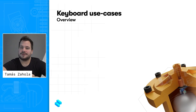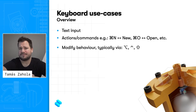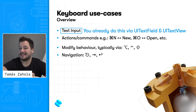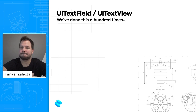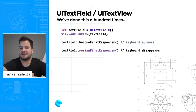Let's start with keyboards. What do applications use keyboards for? The obvious answer is text input, of course. But then there are actions or shortcuts like Command-N for new, Command-Z for undo, Command-O for opening a file, etc. We also have modifier keys like Shift, Option, and Control, which we use to change the behavior of some actions. We also use keyboards for navigation, like tabbing between input fields, dismissing pop-ups, confirming them with the Return key, etc. Let's do a quick recap on text input — iOS development 101 style. You create a text field, add it to the view hierarchy, call becomeFirstResponder and the keyboard appears, call resignFirstResponder and the keyboard disappears.